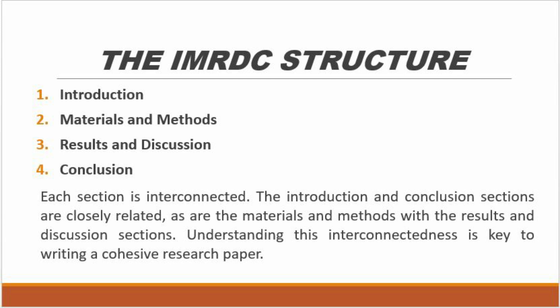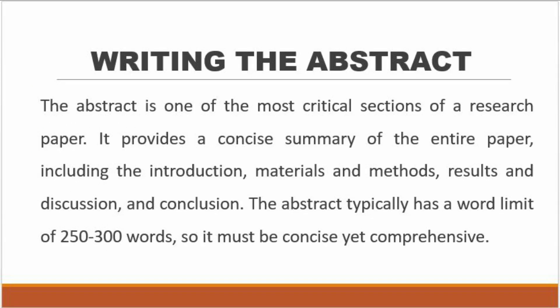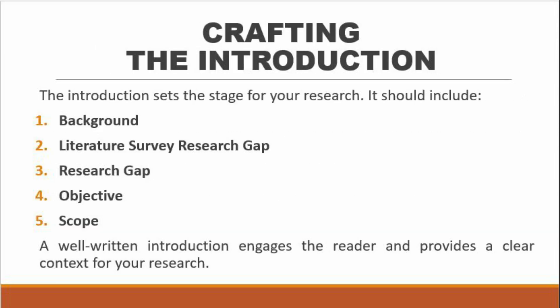Each section is interconnected. The introduction and conclusion sections are closely related, as are the materials and methods with the results and discussion sections. Understanding this interconnectedness is key to writing a cohesive research paper. The abstract is one of the most critical sections — it provides a concise summary of the entire paper, including the introduction, materials and methods, results, discussion, and conclusion. The abstract typically has a word limit of 250 to 300 words, so it must be concise yet comprehensive.